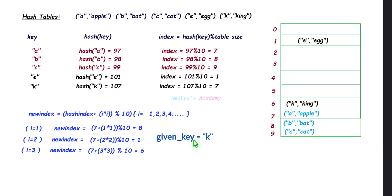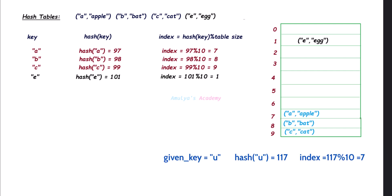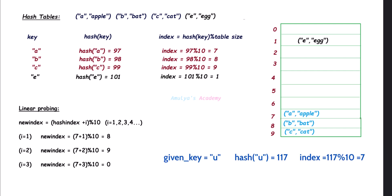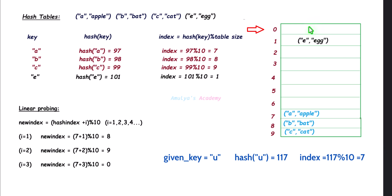Now, what if I want to find a key not present in the hash table? We'll get index 7 for this key, check that slot — key is not here — check the next slot — key is not here — check the next available slot — we get an empty slot, which means the key is not present in the hash table.